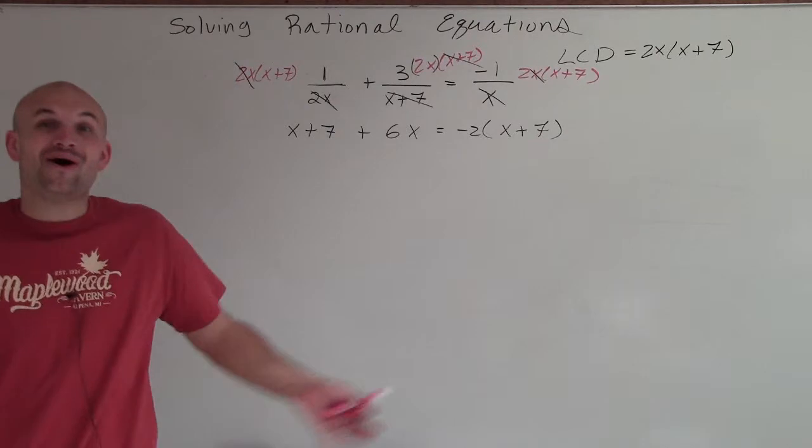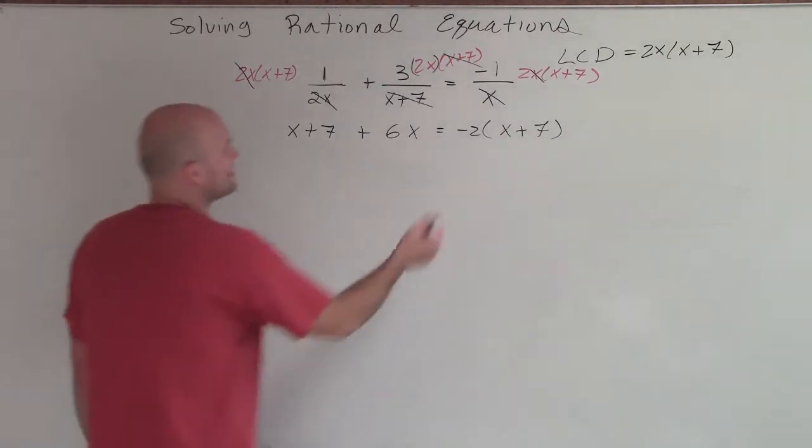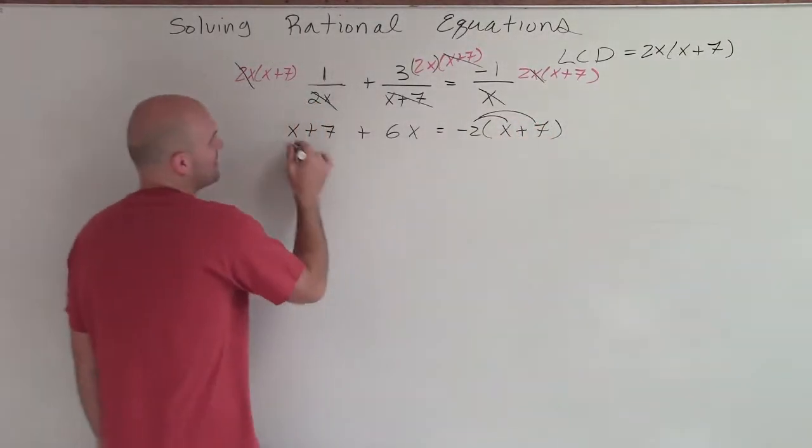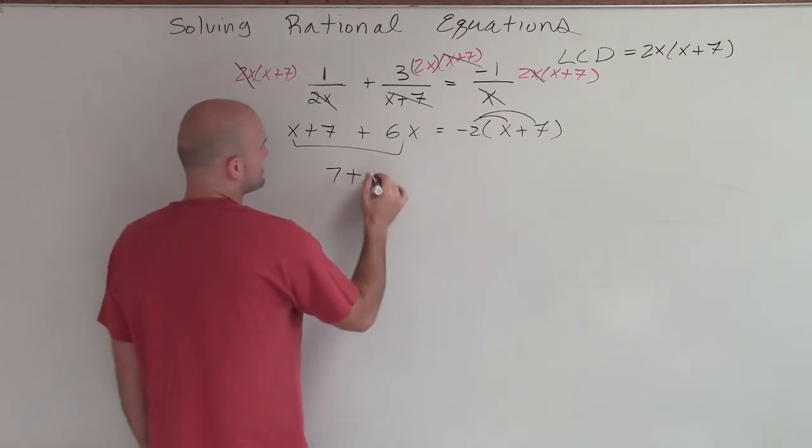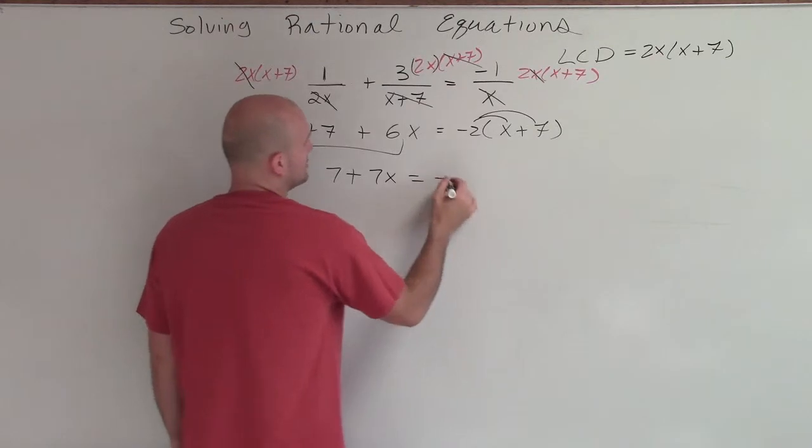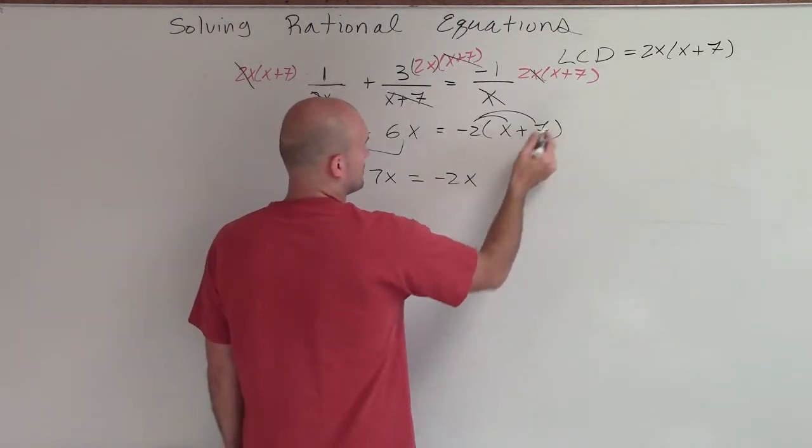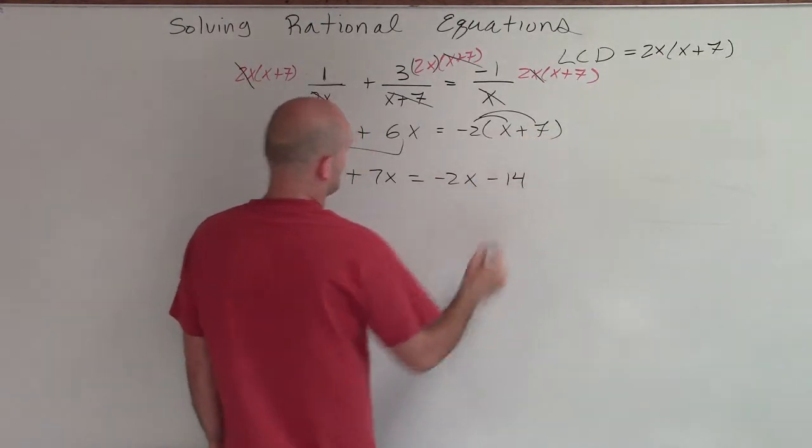So now we've got rid of all of our fractions, which is good. We like that, right? So now I can apply distributive property and I can combine like terms. So I have 7 plus 7x equals negative 2x minus 14.